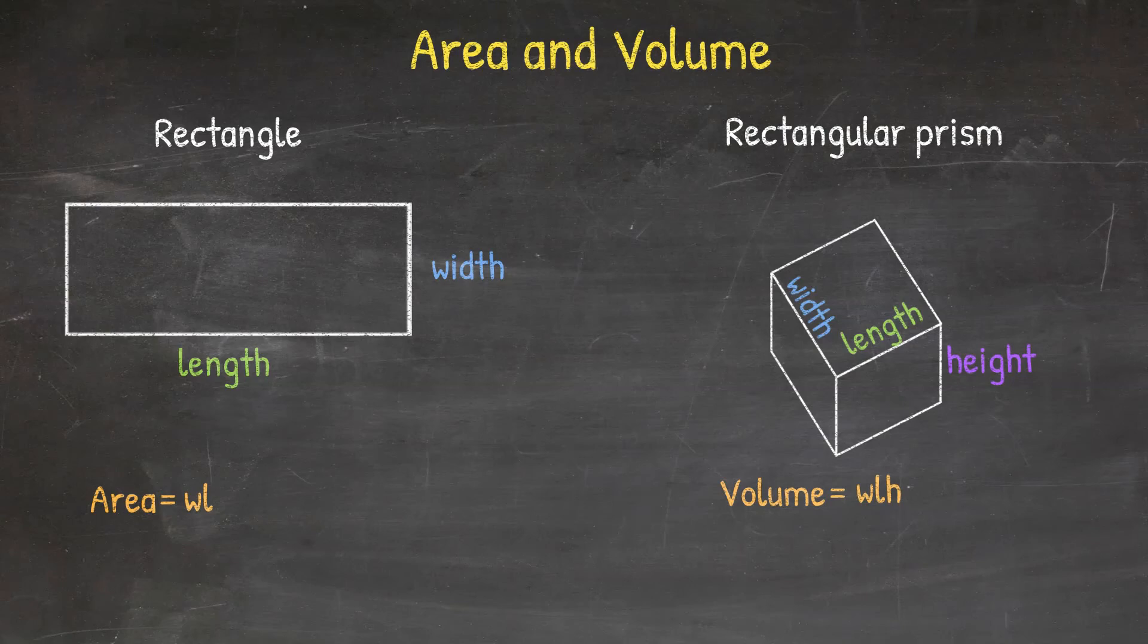For a rectangular prism, we may be asked to calculate the surface area, in which case we calculate the area of each of the sides. But more often, we're interested in calculating the volume.